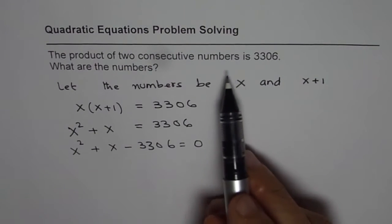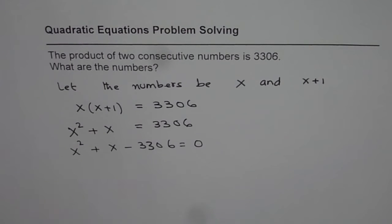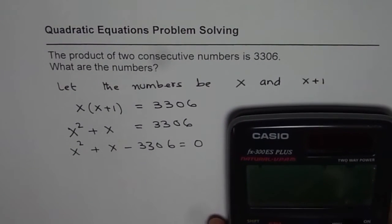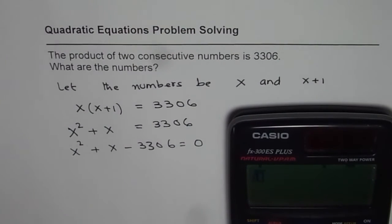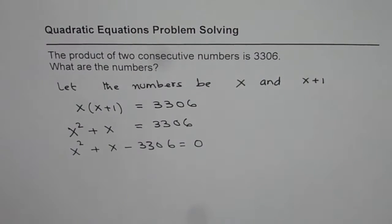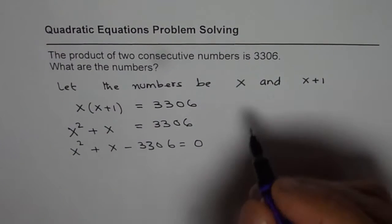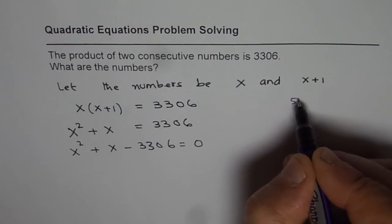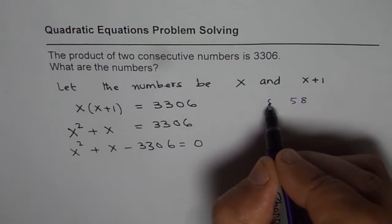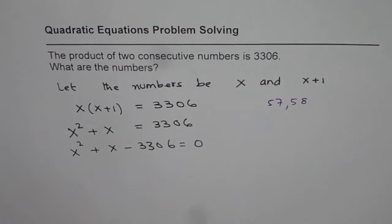Now, since the two numbers are very close, we can approximately get the solution by finding square root of 3306. So if I do square root of 3306, what I get is a number 57.49. So that kind of gives us a hint that the answer could be 57 and 58, right? Since square root is kind of like that. So that is a hint for you to get the answer.